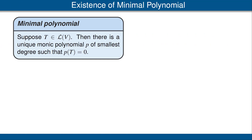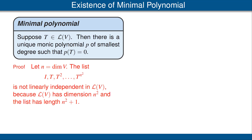Recall our standing assumption that V is finite dimensional. Here is the result that will allow us to define the minimal polynomial. Suppose T is an operator on V. Then there is a unique monic polynomial p of smallest degree such that p applied to T is equal to the 0 operator. Let's look at the proof of this.